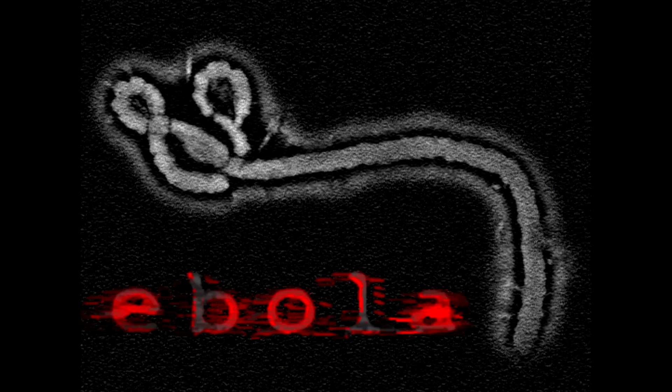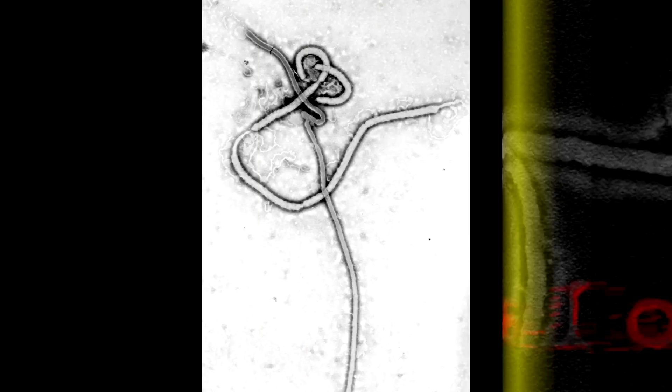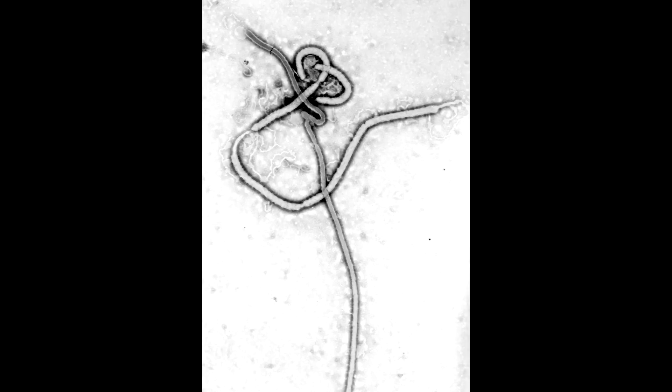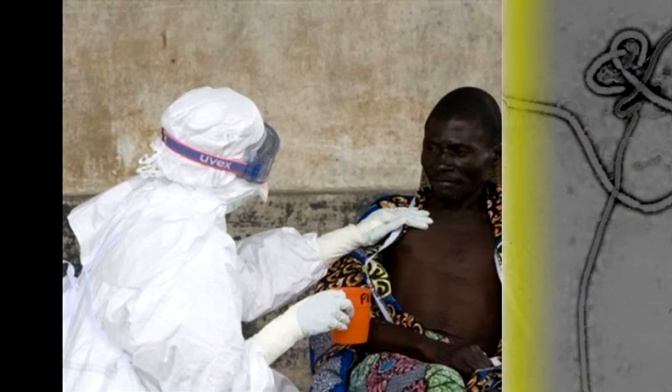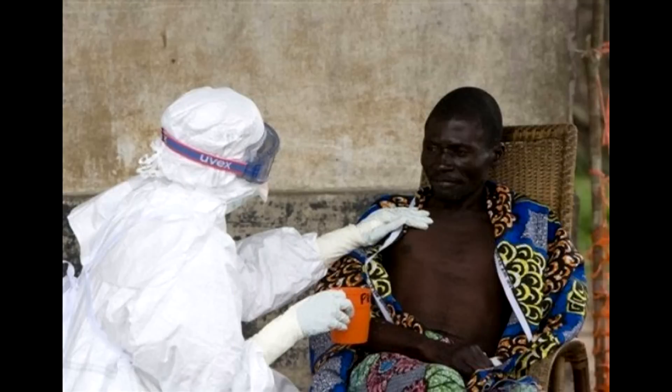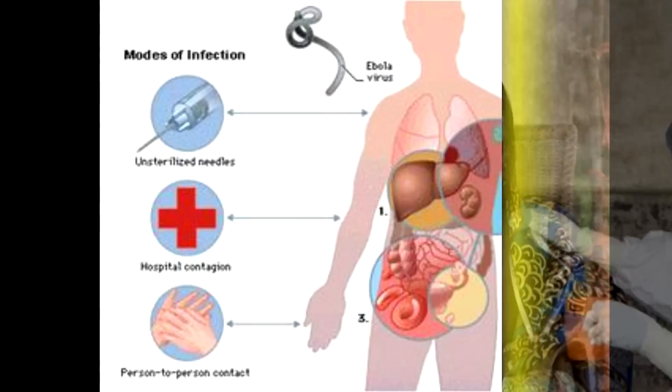As the death toll from Ebola reaches 670, a second American doctor contracts the virus in Liberia, and it is feared to have spread to Nigeria. Here's an explanation of what Ebola is, how it is spread, and how worried we should be.